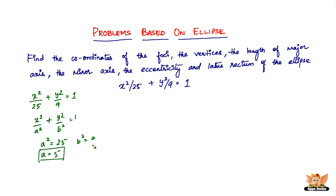So a² = 25, giving a = 5, and b² = 9, giving b = 3. We take positive values because a and b are lengths and lengths cannot be negative. With a = 5 and b = 3, we can find the major axis, minor axis, and latus rectum, but to find the foci we also need C — the distance from the center to the focus.